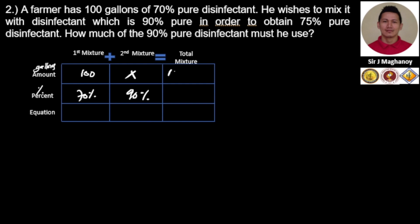So that is 100 plus X. How about here? The output is 75% pure disinfectant once 70% and 90% is mixed together, so this is 75%. From our table we can formulate our equation here, that is 100